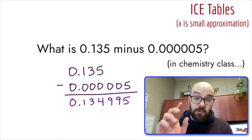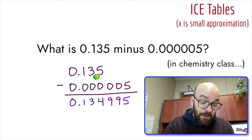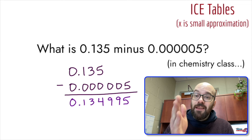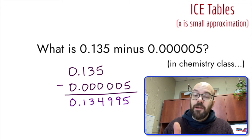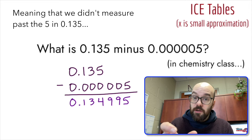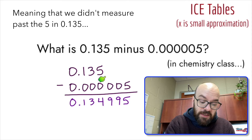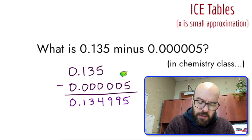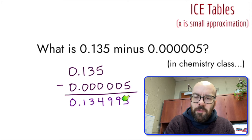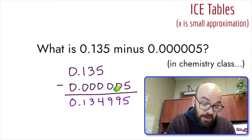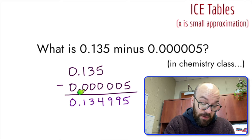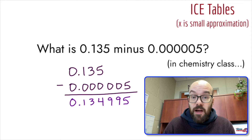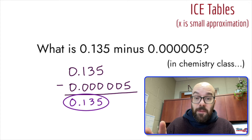But in chemistry, numbers are tied to a measurement. When we end a number like 0.135, that's the last digit we have any certainty on — the digits after that are uncertain; we don't know what they are. So doing the subtraction is like mystery number minus 5, which gives us a mystery number. We wouldn't write anything there, and we really wouldn't start our subtraction until the significant digits align, leaving us with 0.135. So the answer in chemistry class is 0.135.